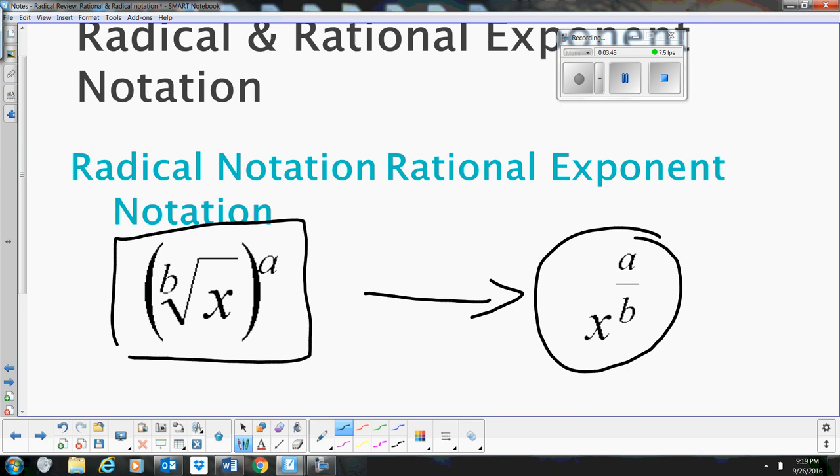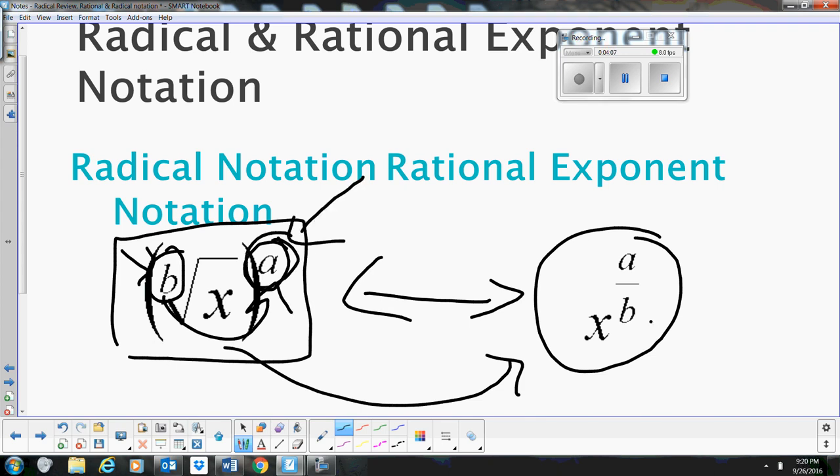And you can actually switch between these two forms very easily. Where in radical form, we've got a root on the left side, and then we're raising to a power on the right side. Well, if we change this form from a radical to a rational, what we do is the root becomes the denominator, and the power, the exponent, is our numerator.